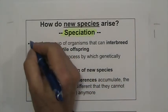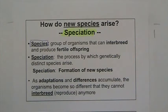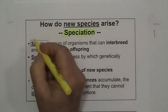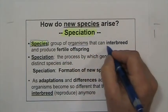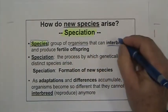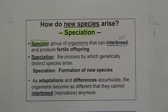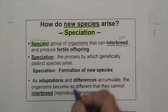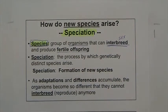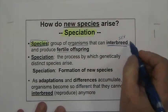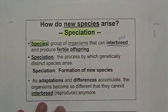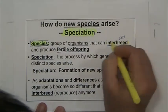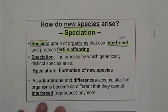Before we start, we need to clearly define what we are going to be considering a species. A species is a group of organisms that can interbreed — basically they can reproduce with each other — and most importantly, they can produce fertile offspring. There are several organisms that can interbreed but never produce offspring, so you have to interbreed and have offspring that is fertile and able to continue reproducing.